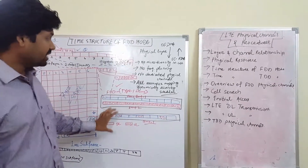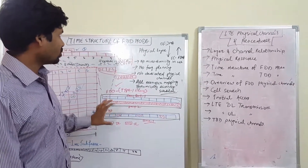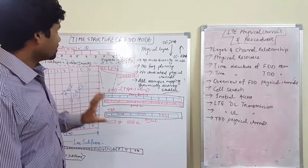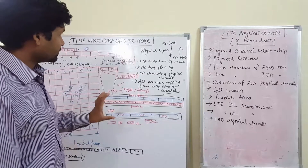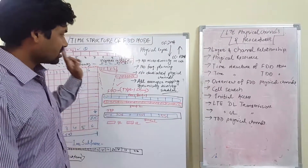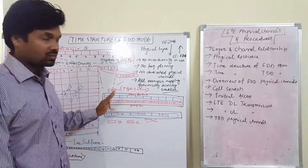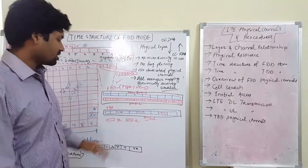This is the FDD frame Type 1, which is common for both uplink and downlink in FDD mode. Now let's see the TDD time structure — the Type 2 frame.